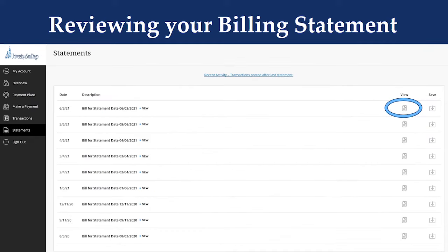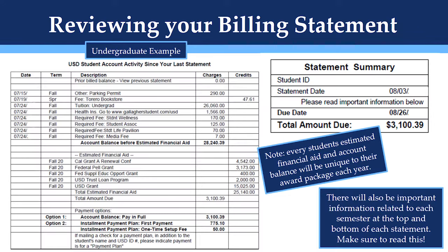After clicking statements, you will be brought to a list of billing statements that have been issued on your account. Click the icon under the view column to view the statement. This will be located on the right hand side of the page. After you click on view on any given statement, you will see statements that look similar to what you're seeing on the screen right now.